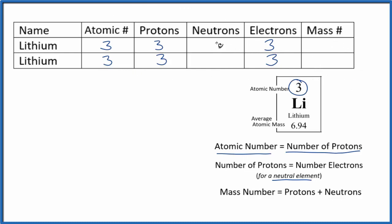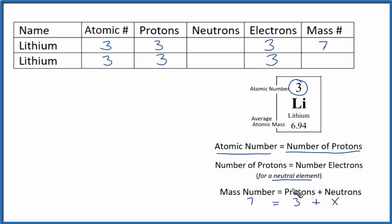That leaves us with neutrons and the mass number. Typically when we fill these tables out, we'll be given neutrons or mass number. If we're not, we can round the atomic mass to get the mass number — we round 6.94 to seven. So with a mass number of seven, we can figure out the neutrons: mass number seven equals protons plus neutrons, so 7 = 3 + neutrons. Four plus three gives us seven, so we have four neutrons.